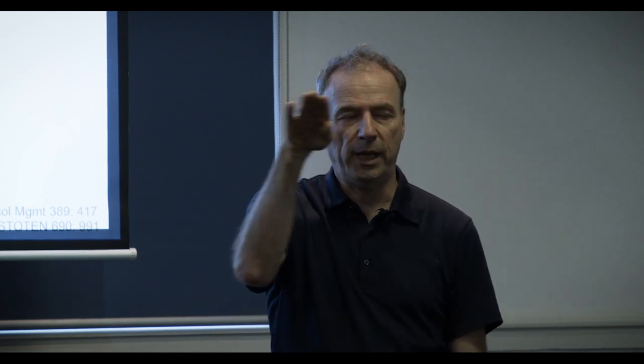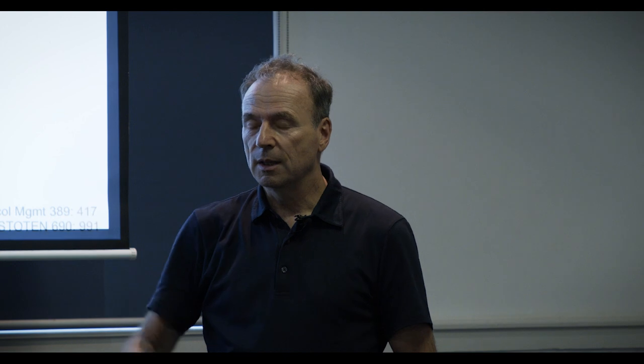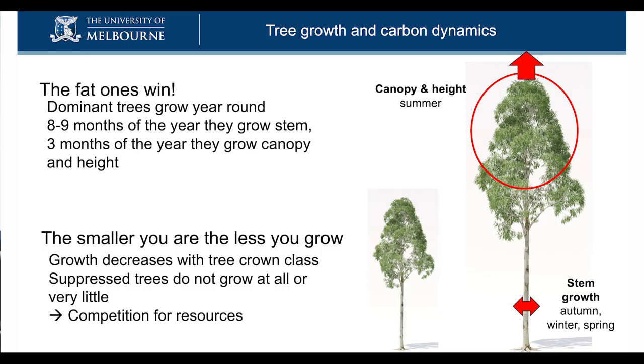We measured this with laser scanners doing a 360-degree scan in the forest every day for about three years. We detected that the canopy is actually moving — mainly in the three summer months. That's also when we have the highest turnover of leaves and the biggest litter fall. It's not related to drought stress because new leaves grow at the same time, so leaf area throughout the year is very stable. To summarize: in the Wombat Forest, the fat trees are winning. They grow stems in autumn, winter, and spring, and in summer they shoot up — putting on new canopy, new leaves, and height growth.